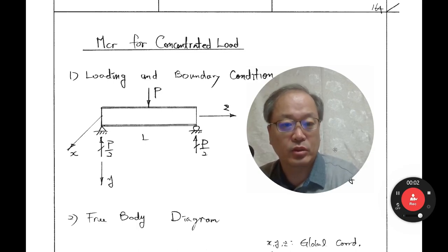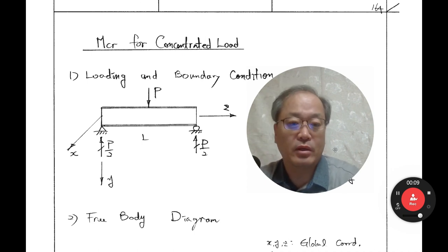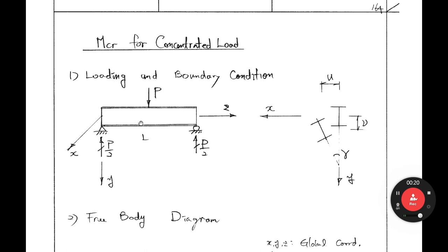Hello everybody. Let's continue driving MCR for a concentrated loading case. This is a simply supported beam subjected to a concentrated load P at mid-length, with reactions P over 2 at each support. As P increases, you have vertical displacement. When P reaches PCR, lateral torsional buckling occurs — the beam has lateral displacement as well as rotational angle. We call it lateral torsional buckling.